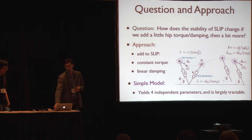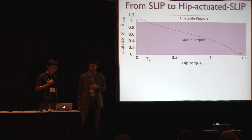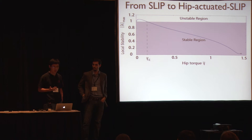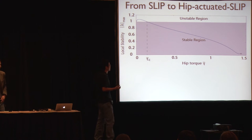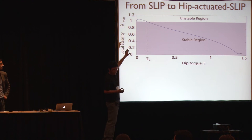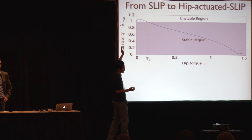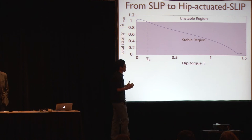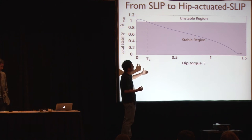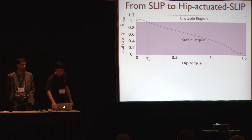We actually get really good benefits in the robust stability category. Starting with a simple SLIP solution and gradually increasing the torque, we show the maximum eigenvalue versus the gradual increase of hip torque. We found that when you first introduce hip torque and leg damping, it actually destabilizes the model rather than stabilizing it. But when you further increase the strength of hip torque and leg damping, it finally improves stability.